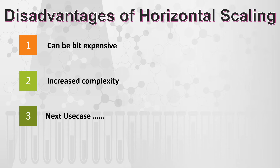It is important to understand clearly that horizontal scaling is useful when the request size or request payload size is the same but the number of requests has increased. We increased the number of tables because people are still coming in groups of two — that is why we can very easily handle this situation by adding more tables.